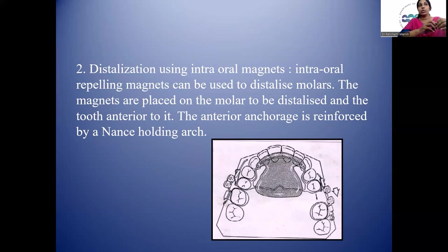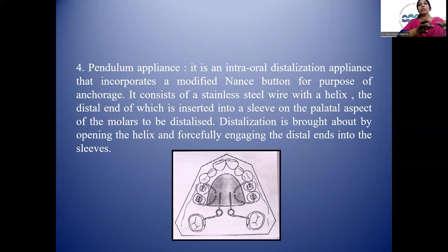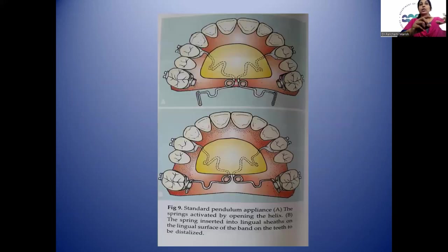Intraoral repelling magnets can be used to distalize molars. The magnets are placed on the molars to be distalized and on the tooth anterior to it; anterior anchorage is reinforced using a NANCE holding arch. The pendulum appliance is an intraoral distalization appliance incorporating a modified NANCE button for anchorage. It consists of a stainless steel wire with a helix whose distal end is inserted into a sleeve on the palatal surface of the molar to be distalized. Distalization is brought about by opening the helix and forcefully engaging the distal ends into the sleeves.